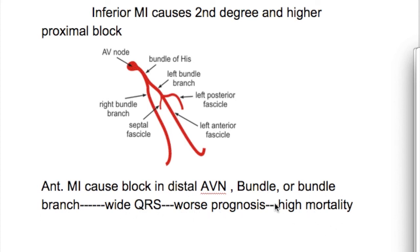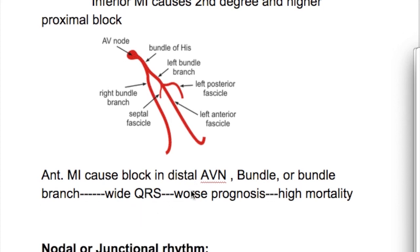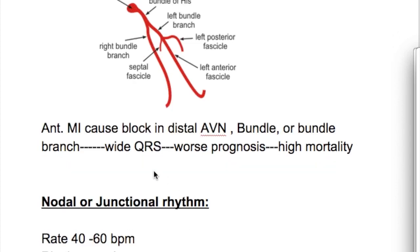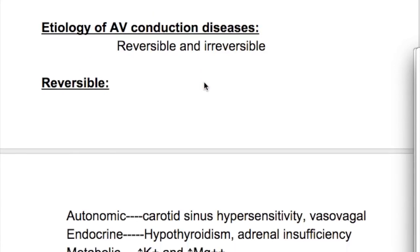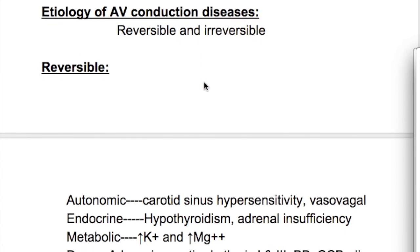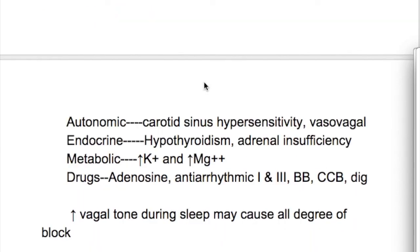Distal block causes a wide QRS, which gives a worse prognosis and high mortality. Inferior MI causes a proximal block which is less dangerous, whereas anterior MI causes distal AV block or block of the bundle of His, leading to wide QRS complex. Wide QRS complexes are a feature of distal AV nodal block or block of the bundle of His.